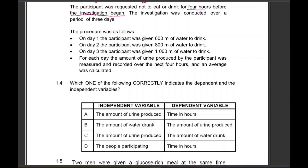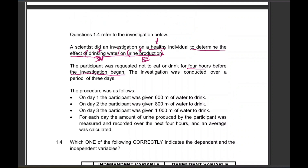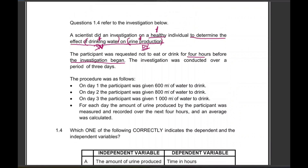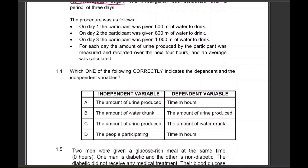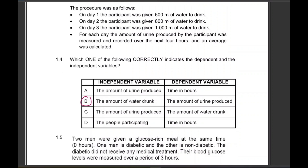We've already mentioned the variables. Water intake, since they're talking about the effect of drinking water, will be the independent variable. Urine production will be the dependent variable. So the answer is definitely B — amount of water and amount of urine produced. We can't take A — time in hours cannot be the dependent variable, and the independent variable definitely cannot be the amount of urine produced.